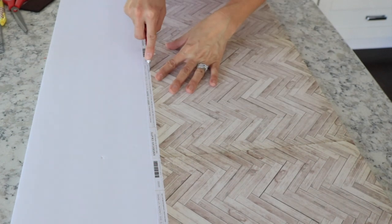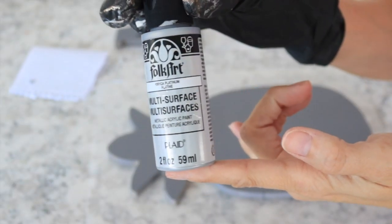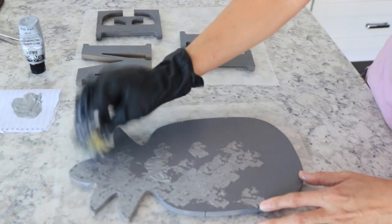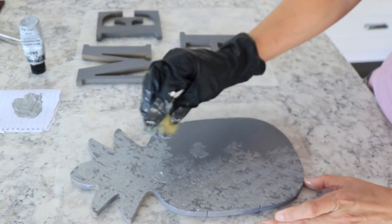Next I'm taking my platinum Folk Art acrylic paint and I'm just going to sponge it on with a tiny sponge and just make this look galvanized.